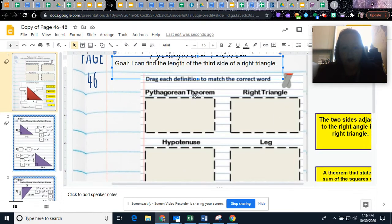Our vocab words are Pythagorean Theorem, Right Triangle, Leg, and Hypotenuse. We are going to look at this two different ways. First is just going to be click and drag, and then next we're going to label a triangle.